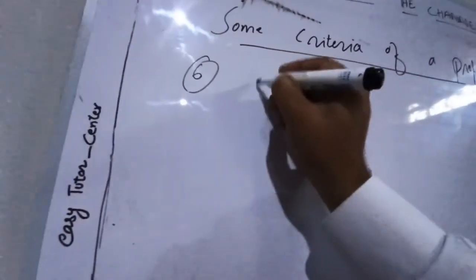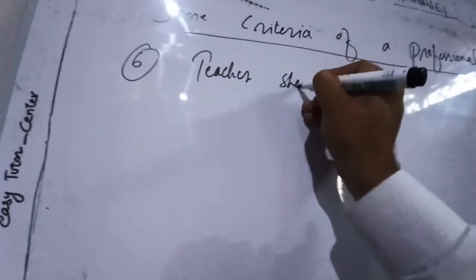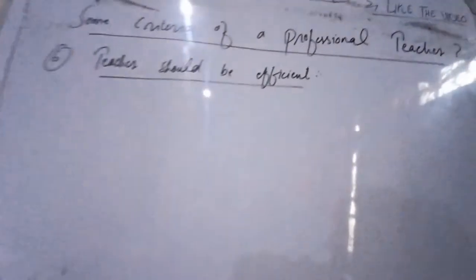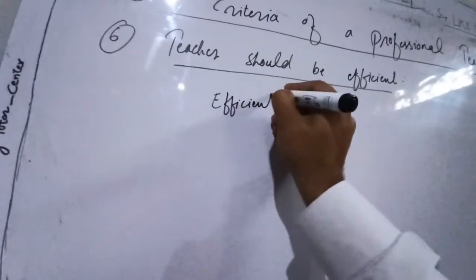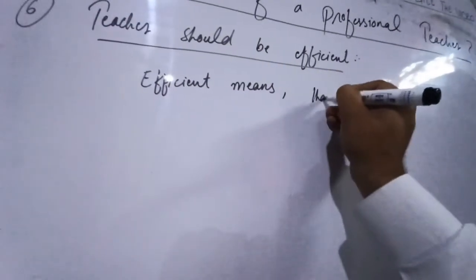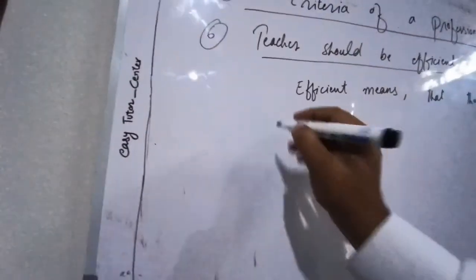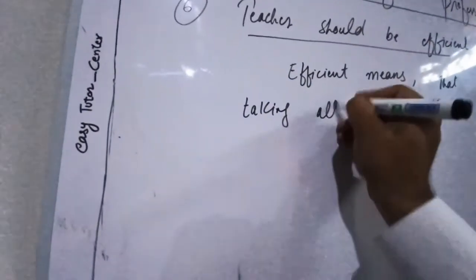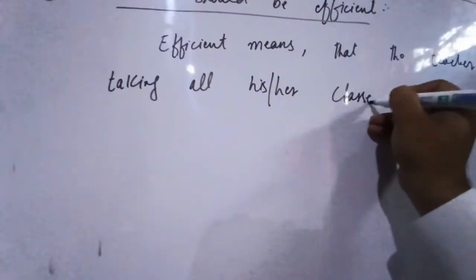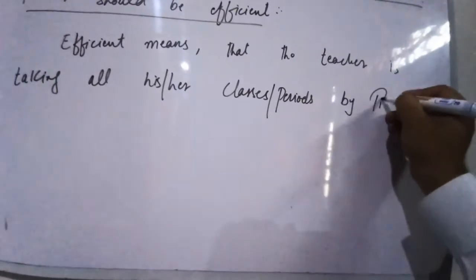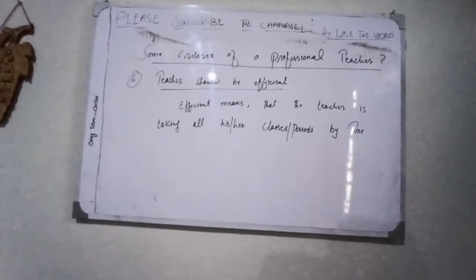Number six: a professional teacher should be efficient. Efficient means that the teacher is taking all her classes — all periods — on time, and is not missing any single class. So this means that a teacher should be efficient.